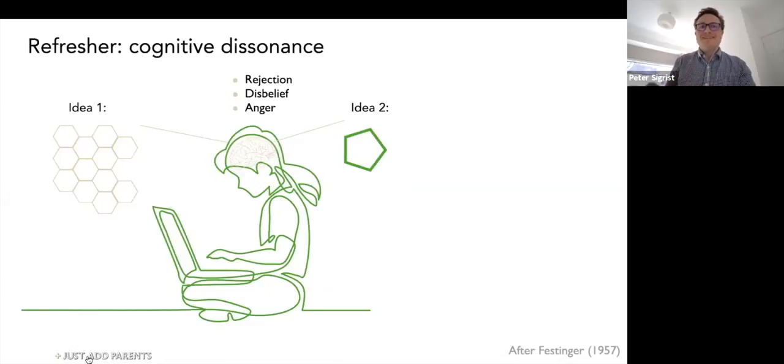For our purposes, the core concept is that ideas or tasks have a degree of psychological compatibility, and if we are asked to entertain incompatible ideas or tasks at the same time, our brains respond by attempting to force some kind of alignment.